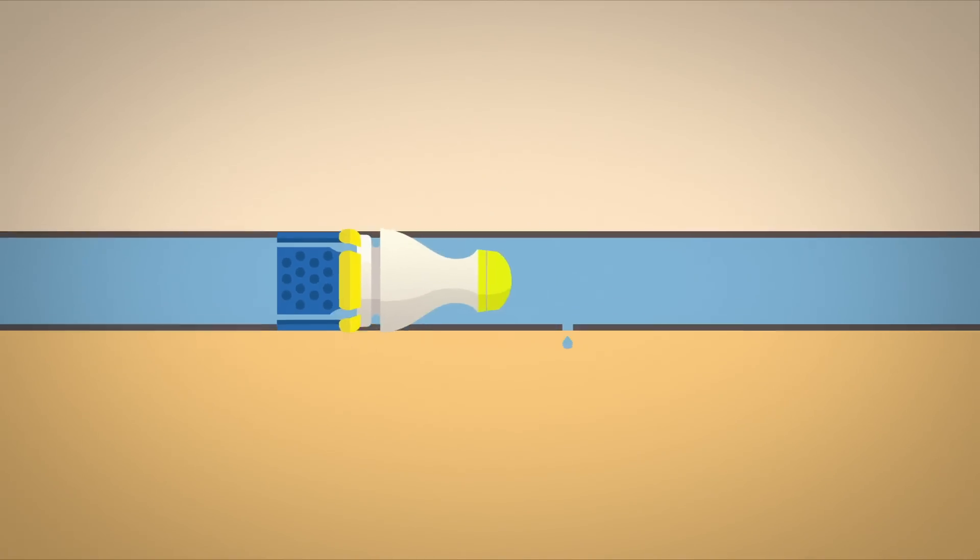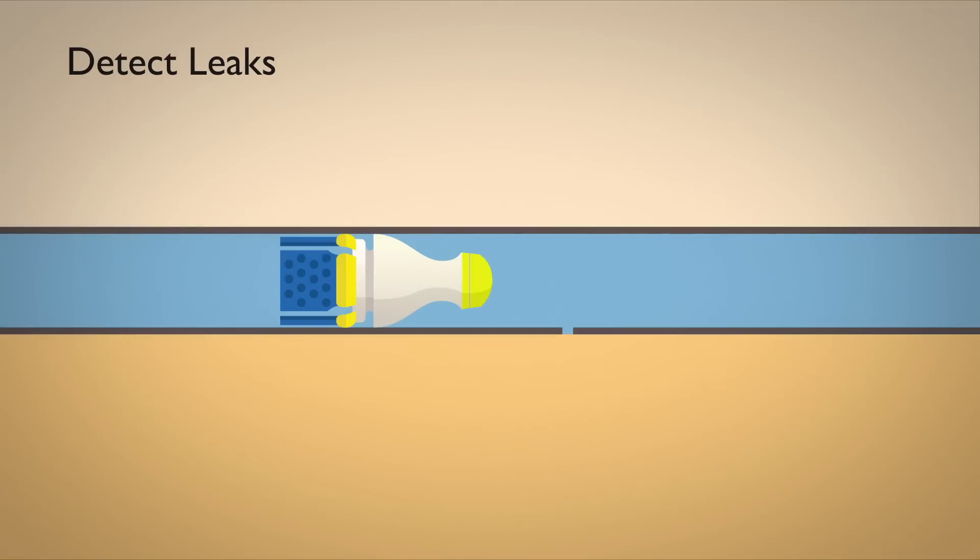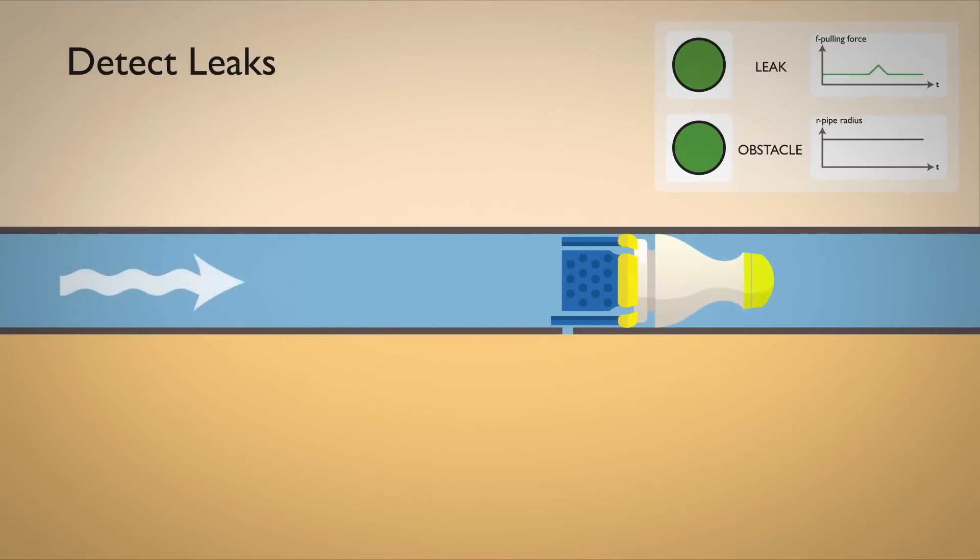So how does this robot find leaks? At a leak, water is escaping from the pipe and creates a suction force. When the robot passes a leak, the blue membrane sensor will feel the suction force and get stretched. The robot senses this stretch and indicates a leak.